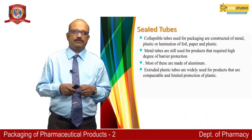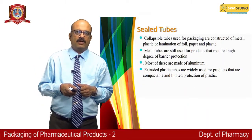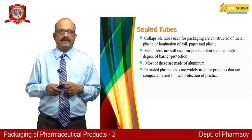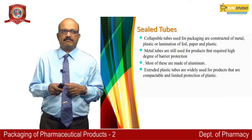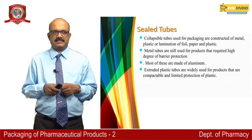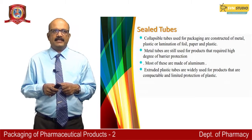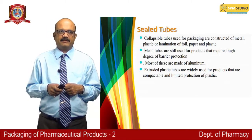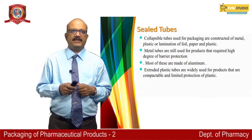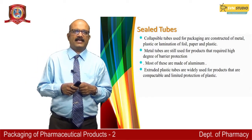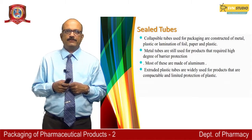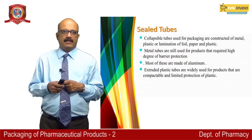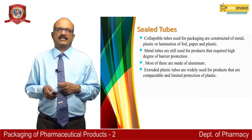Collapsible tubes used for packaging are constructed of metal, plastic, or laminations of foil, paper and plastics. Metal tubes are still used for products requiring a high degree of barrier protection, most commonly made of aluminum. Extruded plastic tubes are widely used for products that are compatible with and require limited protection of plastic.